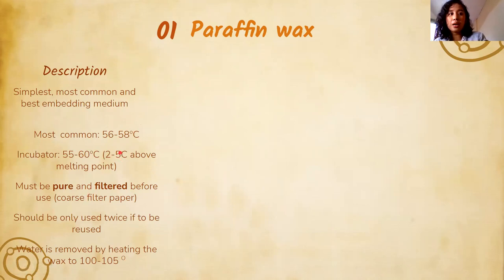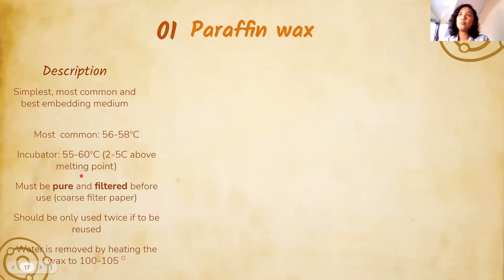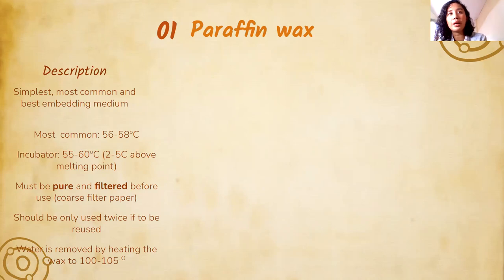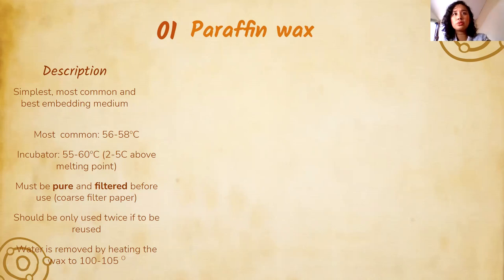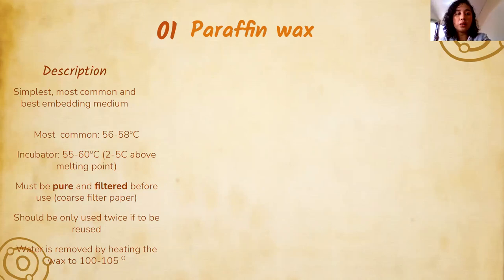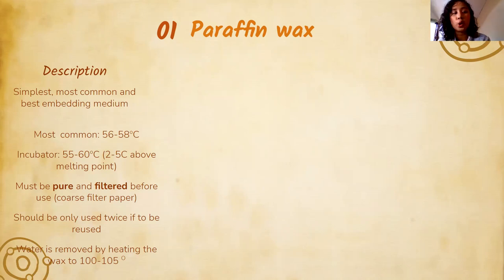Paraffin wax should be pure and filtered before use. It can be reused, but only twice. To ensure a clean, beautiful tissue block without crumbs or dark specks, filter the paraffin with filter paper before use — just like frying oil accumulates crumbs, tissue processing can leave tissue crumbs in the wax. The last change of paraffin should be clean. The paraffin used for embedding from the dispenser should never have been used before.